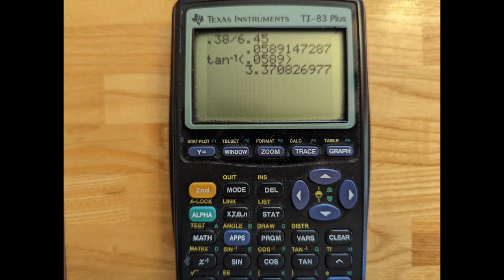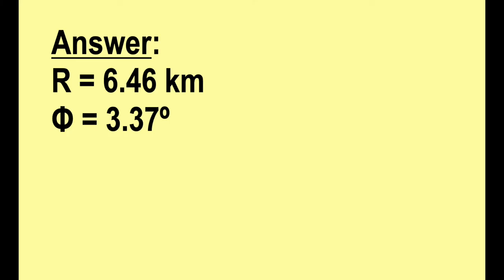When you take a sine, cosine, or tangent, you are putting in degrees to get out the trig value. But with the inverse trig button, you start with the ratio, take the inverse trig, and that will give you back the angle. In this case, in degrees, because the calculator is in degrees mode. So here's the answer to the problem. The distance is 6.46 kilometers and the angle is 3.37 degrees.